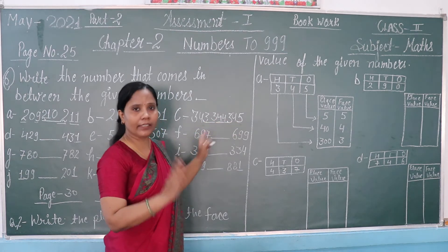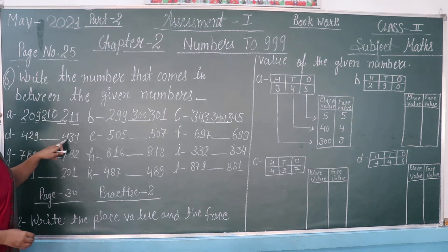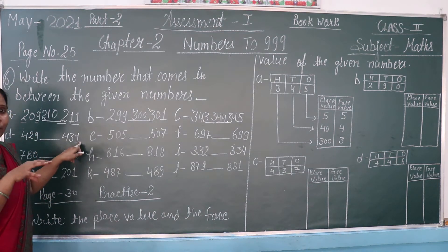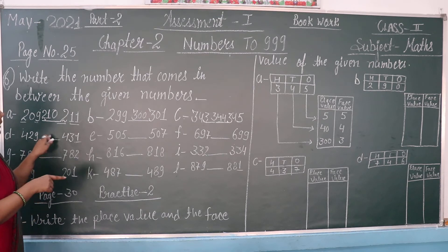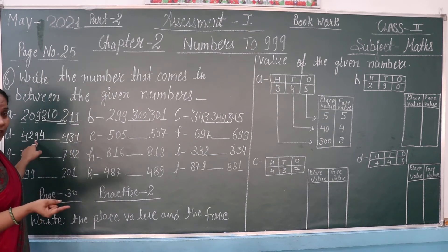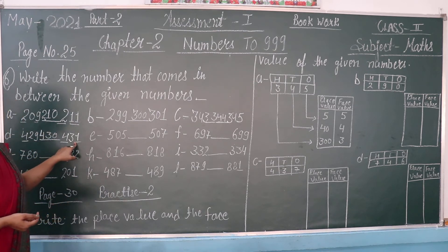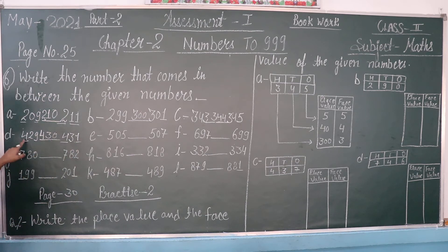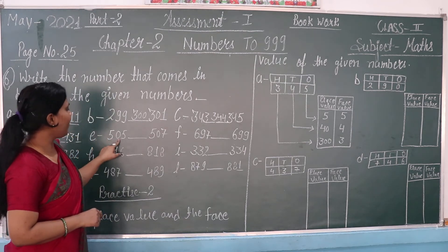Next question: 429 and 431 — there is a missing middle number. This is around 400. Between 29 and 31, the middle number is 30. So the answer is 430. Check: 429, 430, 431 — correct.